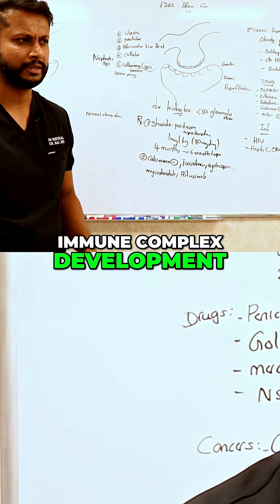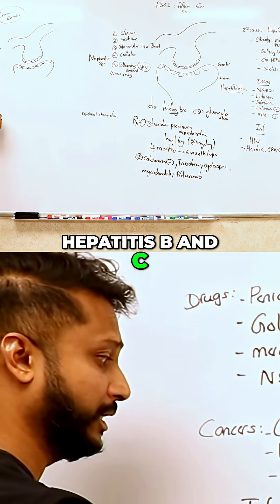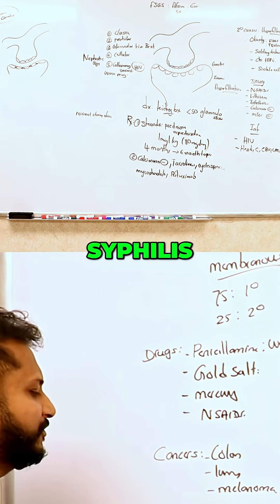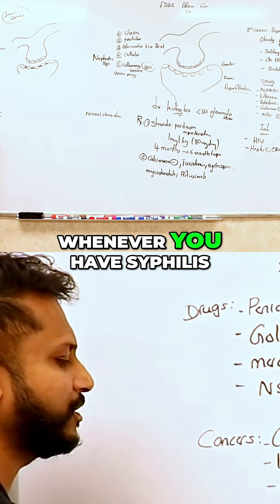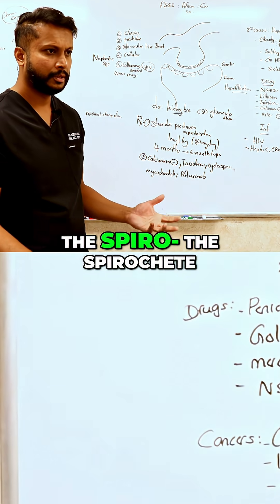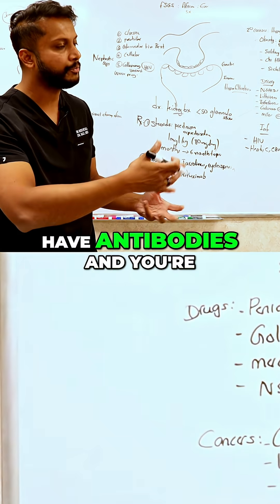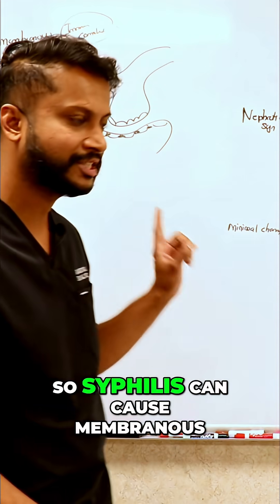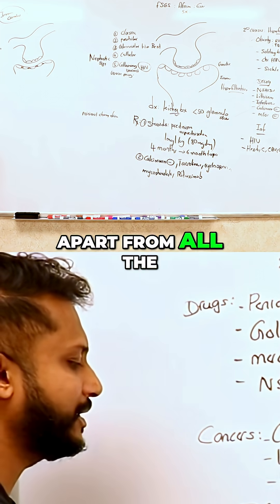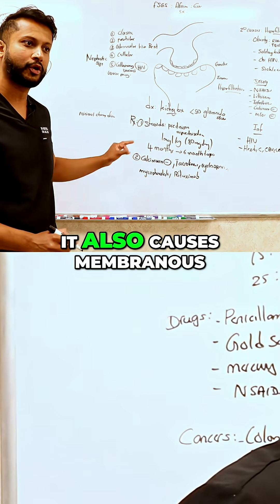Infections can also cause membranous through immune complex development. These include hepatitis B and C, and more uniquely, syphilis — where exposure to the spirochete leads to antigen exposure, antibody formation, and immune complex deposition. H. pylori also causes membranous, which is another favorite on boards.